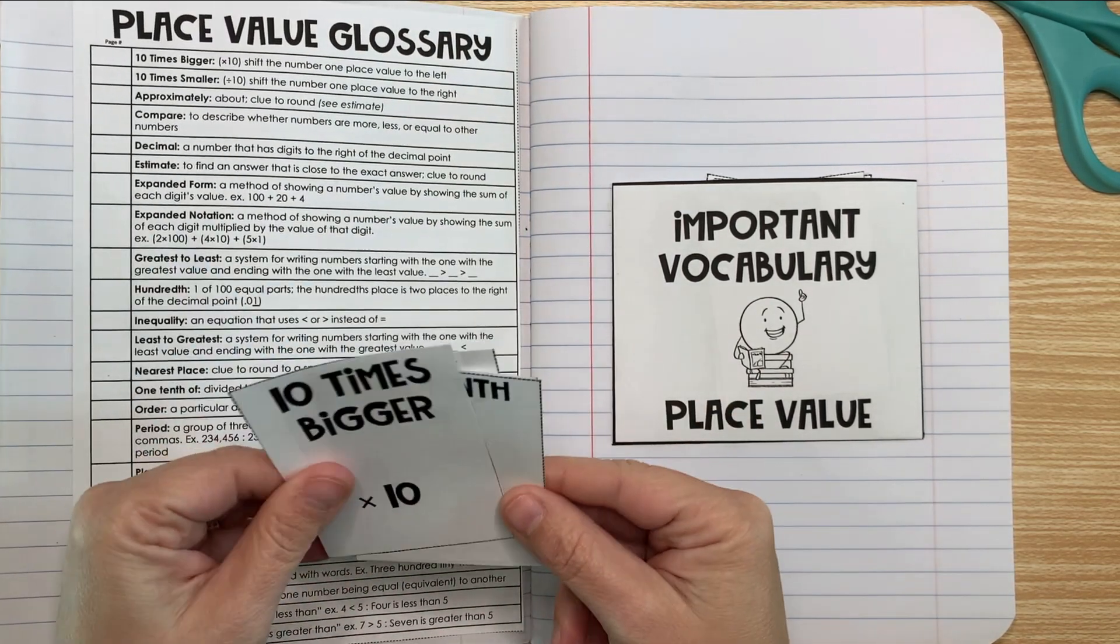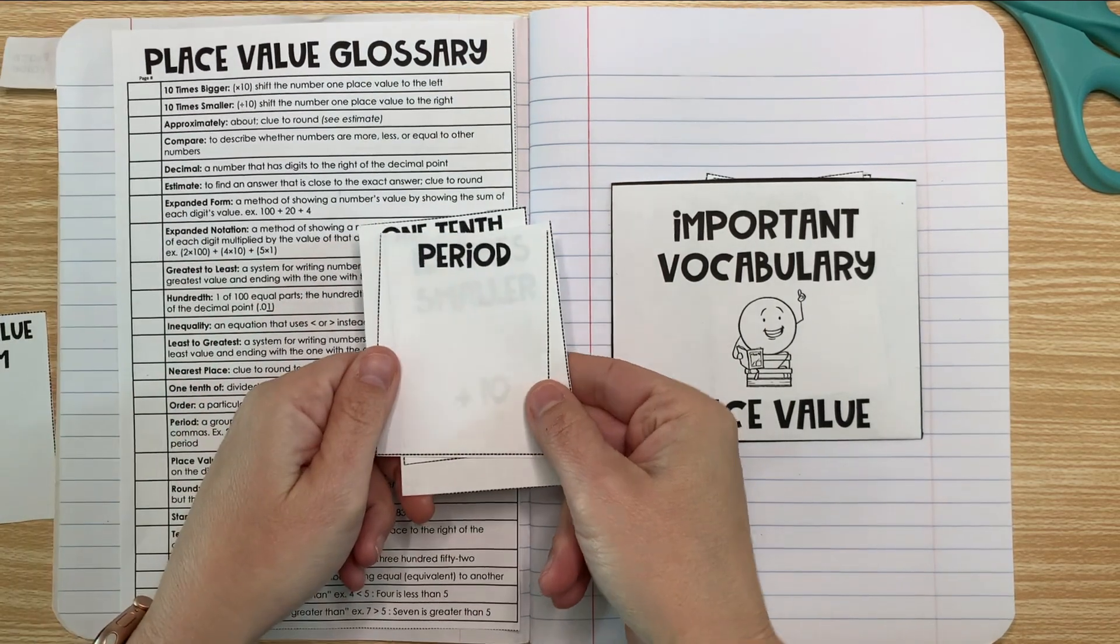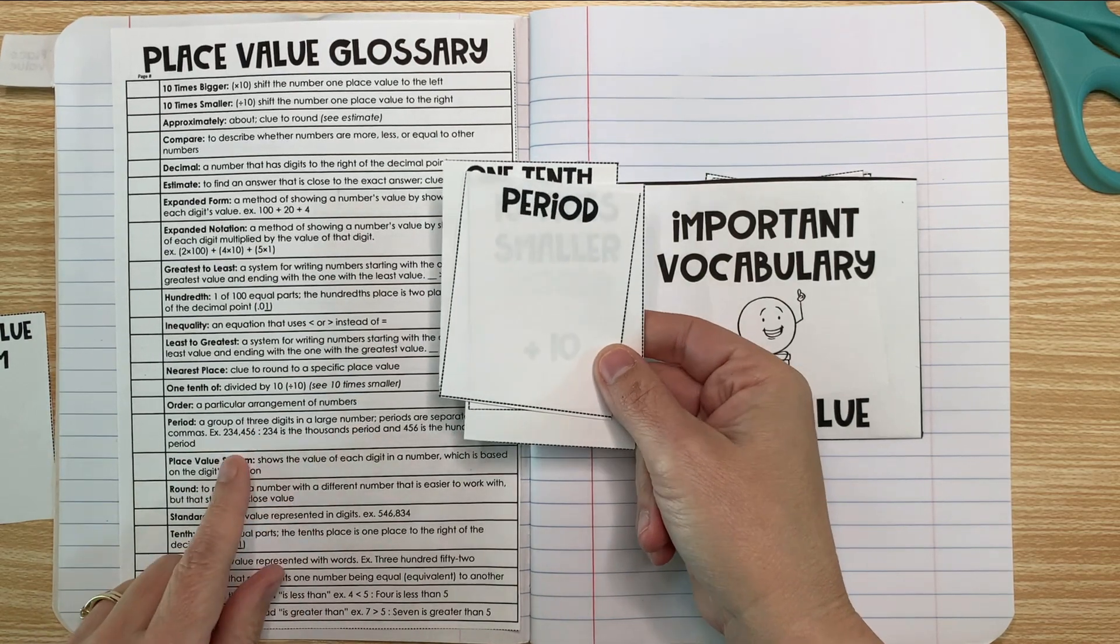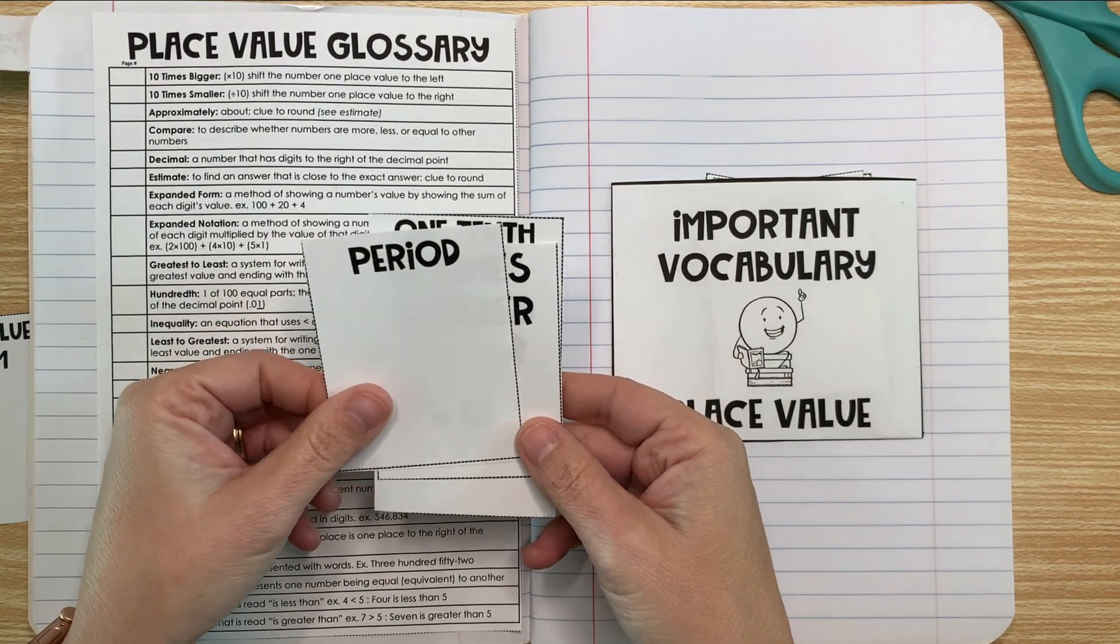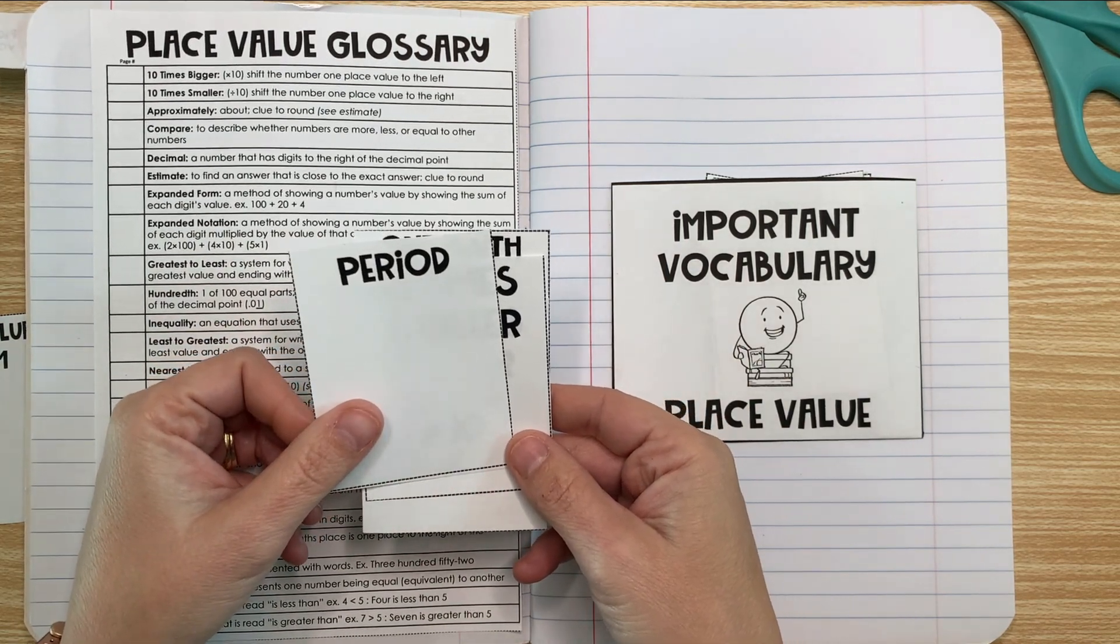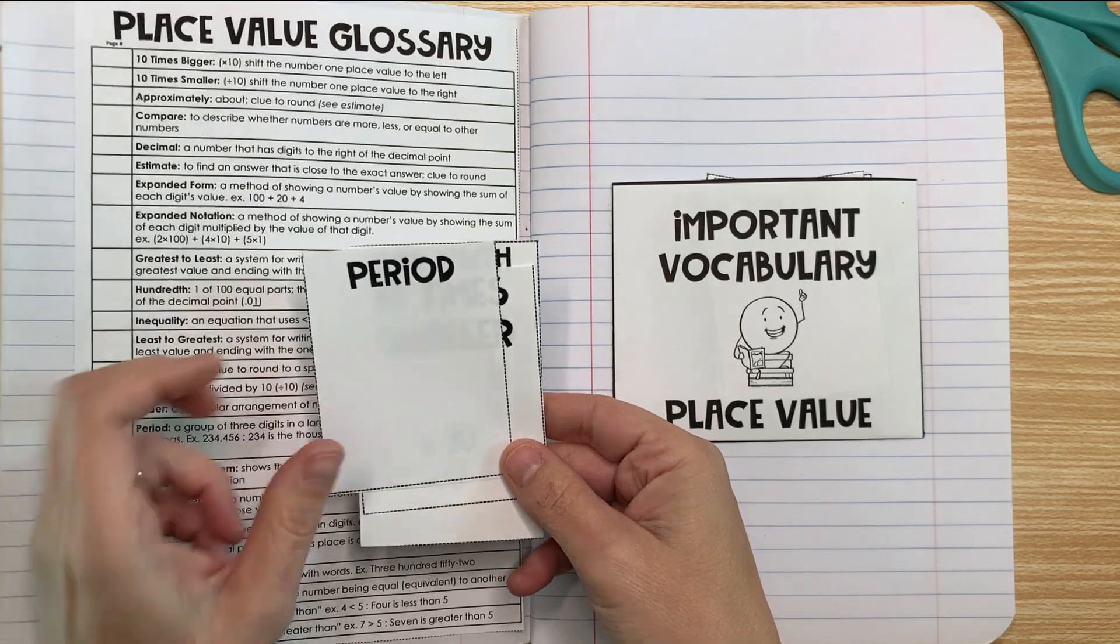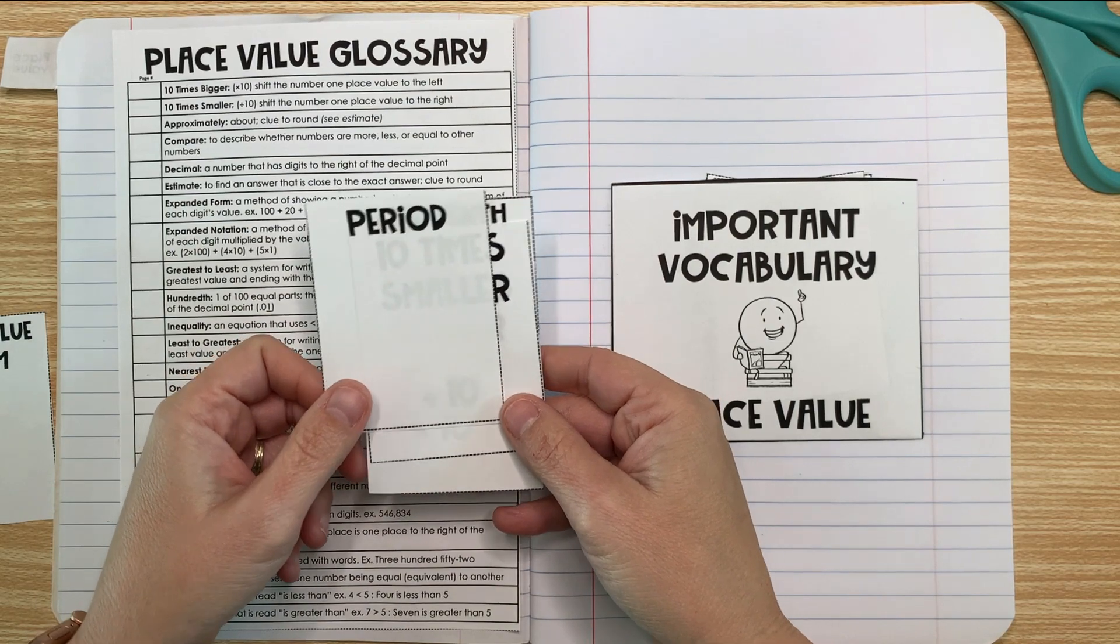Now the place value system is made up of periods. A period is a group of three digits in a large number. Periods are separated with commas. So when you see 365,126, you know that you're seeing two periods, the thousands period and the ones period.